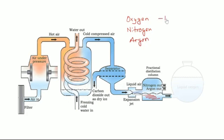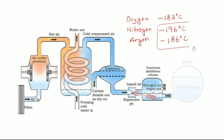The major constituents now in liquid air are oxygen, nitrogen, argon, and krypton. All these liquefied gases have different boiling points: oxygen is minus 183°C, nitrogen is minus 196°C, and argon is minus 186°C. Because of the variation in boiling point, we can separate these liquids using a fractionating column. The column is warmed slowly from near its bottom, maintaining a temperature of approximately minus 184°C — the boiling point of oxygen.